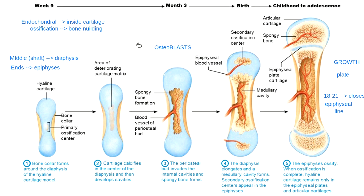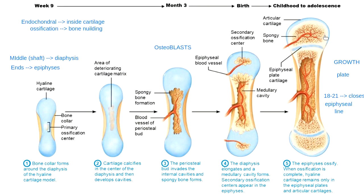We also have articular cartilage at the top and bottom of the bone. Articular cartilage makes sure that bone tissue doesn't rub against other bones. Even after the epiphyseal plate closes and becomes the epiphyseal line, we keep articular cartilage to help with our articulations — our joints. So from entirely cartilage in development, we go to almost entirely bone in an adult, with just a small amount of articular cartilage remaining.